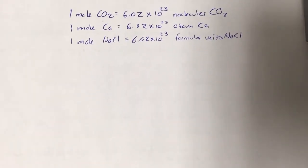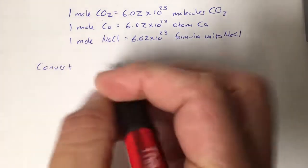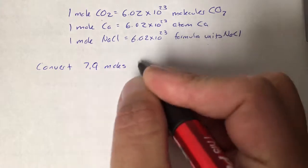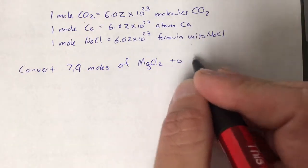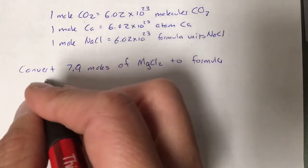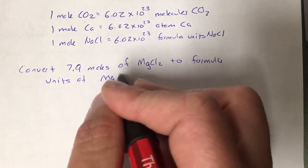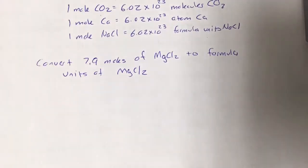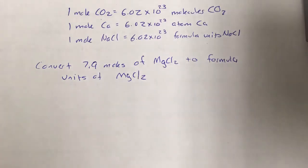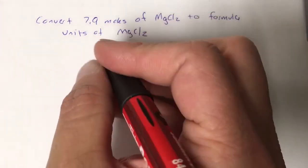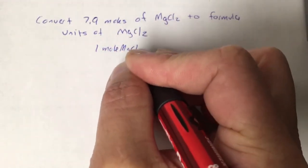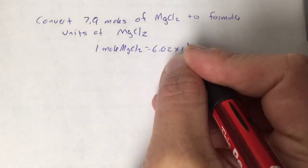Let's convert 7.9 moles of magnesium chloride to formula units. Terminology is dependent on the substance — magnesium chloride is an ionic compound, so we use 'formula unit.' When ionic compounds are involved, the term is formula unit; when it's a covalent one, it's molecule; when it's an element, it's atom. The equivalence: one mole of magnesium chloride equals 6.02 times 10 to the 23rd formula units.